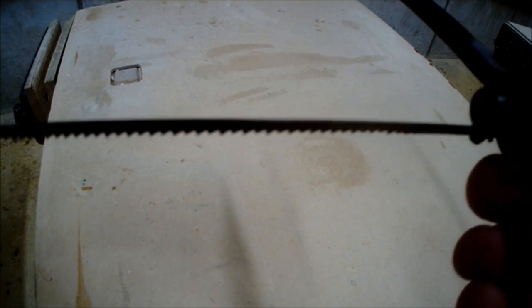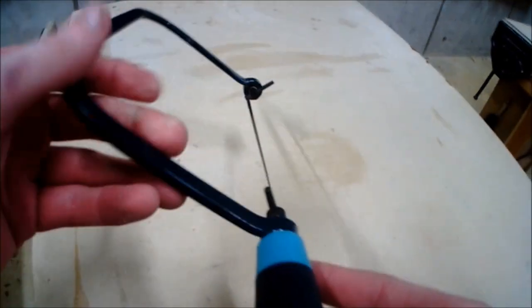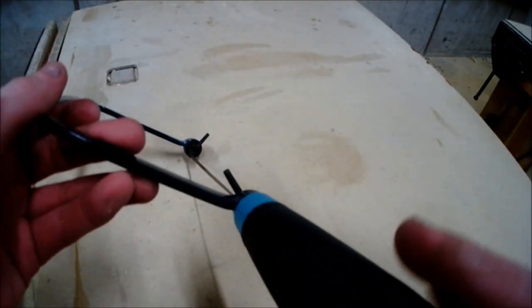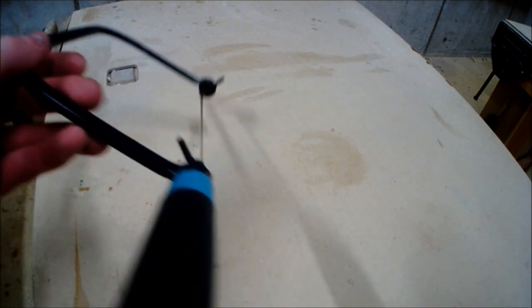As you can see, the teeth are twisted away from each other because the two pins are not perfectly in line. Looking down along the blade, you can see the twist along the blade as the two pins are not in line.